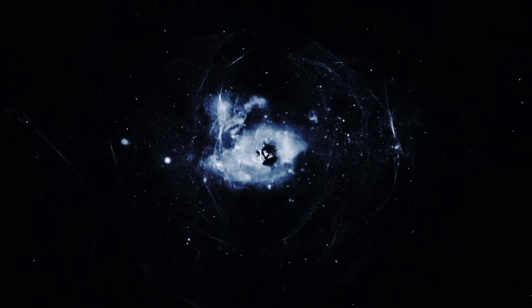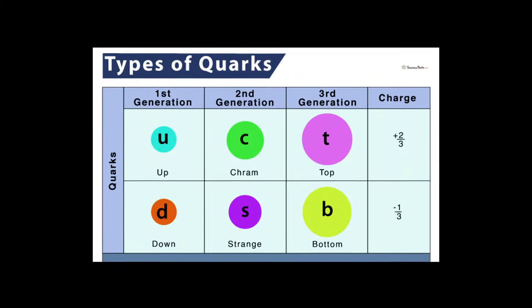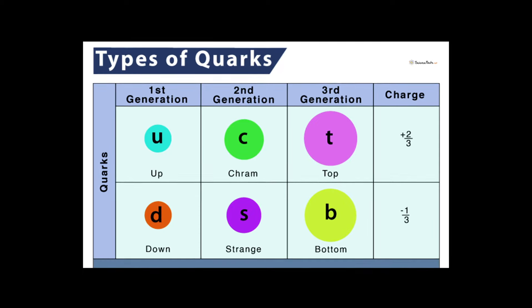Quarks are another type of fundamental particle that, as far as we know, cannot be broken down into smaller parts. Scientists have found six types of quarks: up, down, strange, charm, bottom, and top.